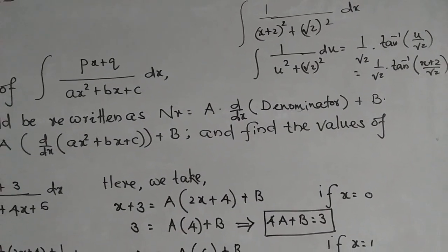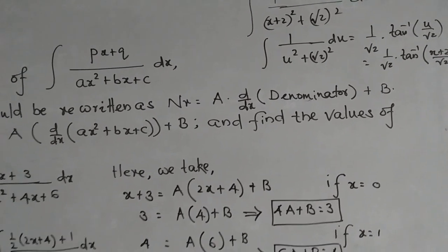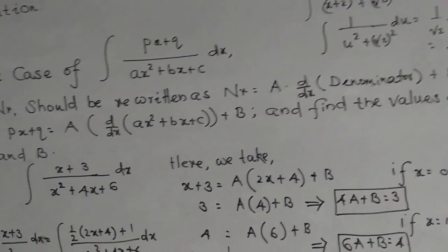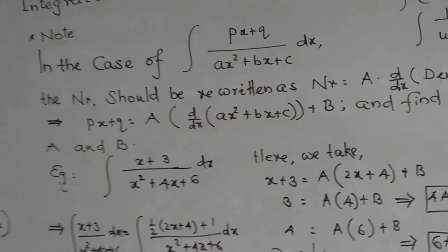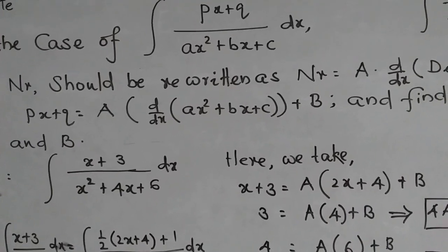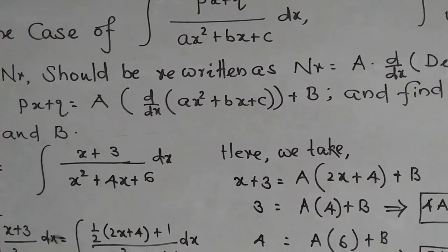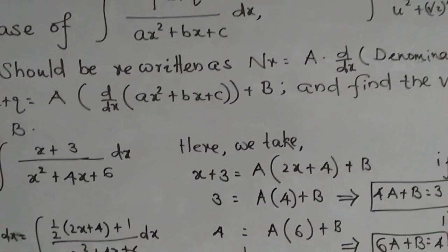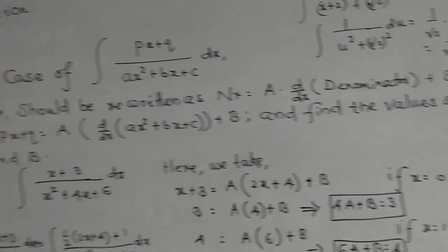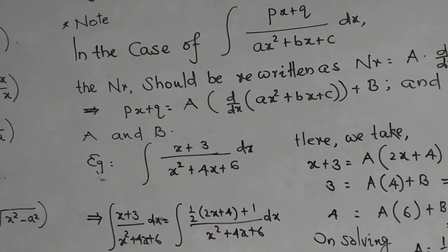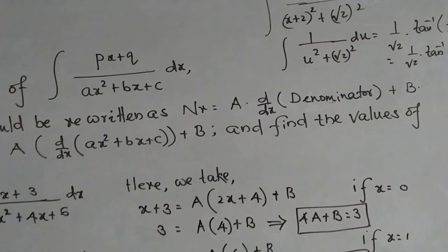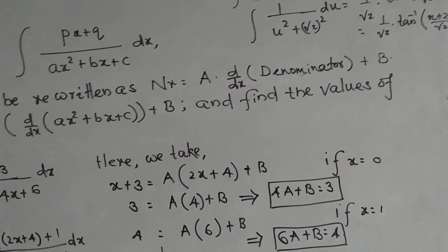So this is the way we normally respond when the numerator is a polynomial. The numerator px plus q is given as A times the derivative of the denominator plus B. In symbolic form: px plus q equals A times d/dx of (ax squared plus bx plus c) plus B. Our intention is to find the real values of A and B from this relation. After getting these values of A and B, we directly substitute them and simplify as shown below.